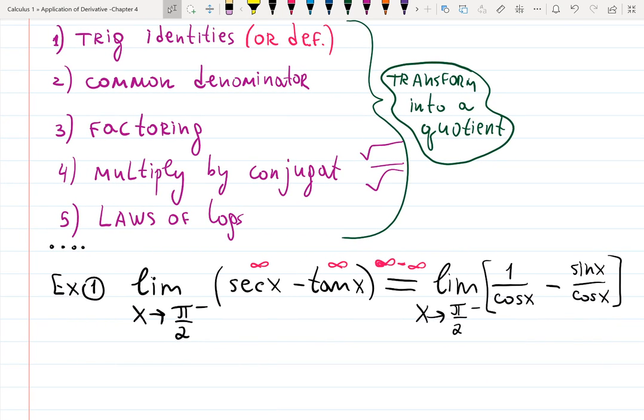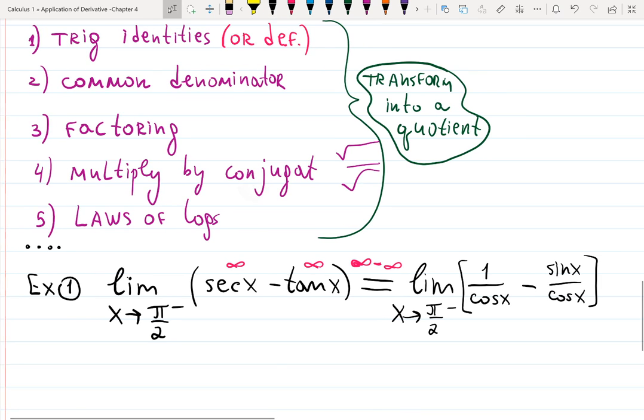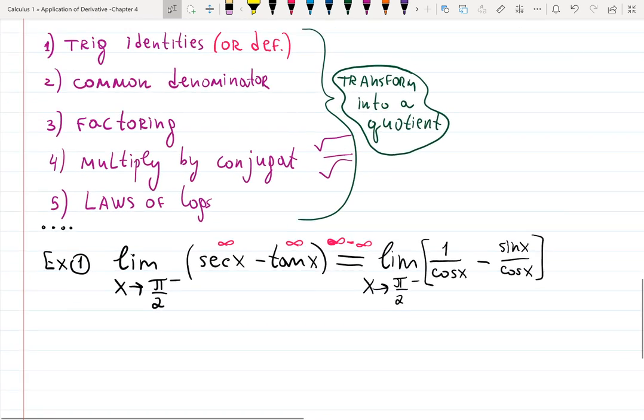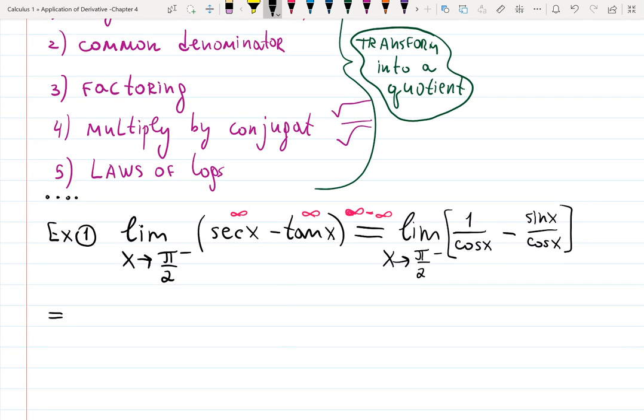Now I have 1 over cosine minus sine over cosine. And now I have several fractions. Do you see something in the list? I see that if we're working with several fractions, I can try to create common denominator. And actually, it already has common denominator. Cosine. Then I will have limit as x approaches pi over 2 minus, basically from the left, cosine at the bottom, and 1 minus sine x at the top. And you see, we created a quotient just like we wanted. That's the whole idea.